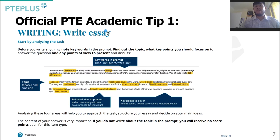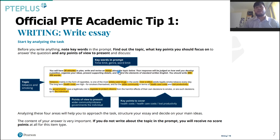Let's have a look at the official PTE Academic tips. The first tip talks about content. The content of your answer is very important. If you do not write about the topic in the prompt, you will receive no points at all for that item type. So before you start writing, note keywords in the prompt, find out the topic, what key points you should focus on to answer the question, and any points of view to present and discuss.